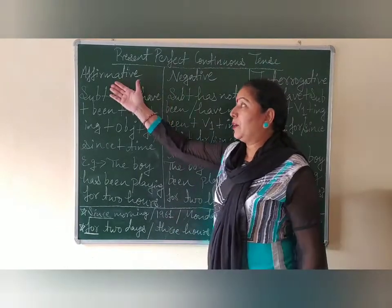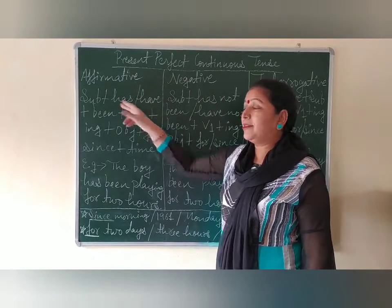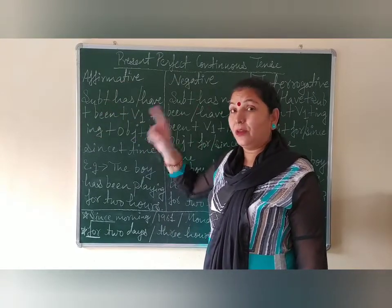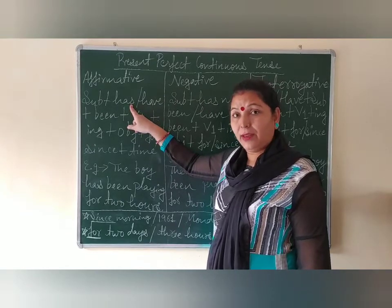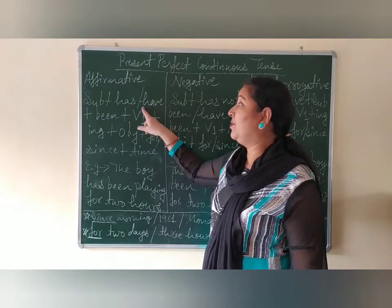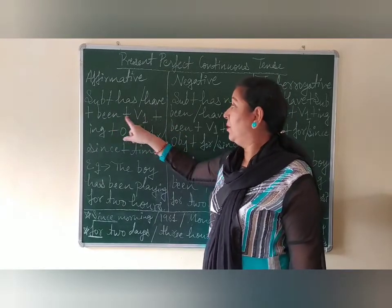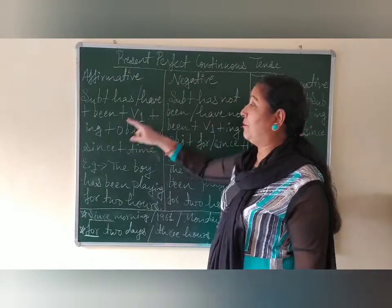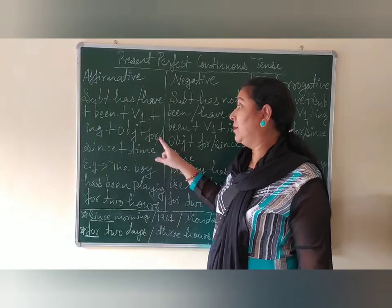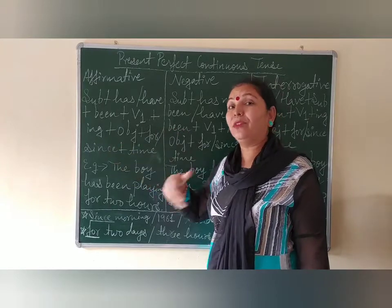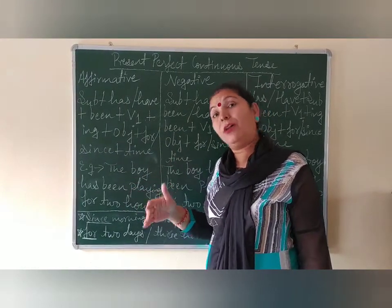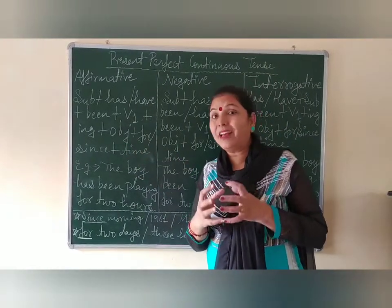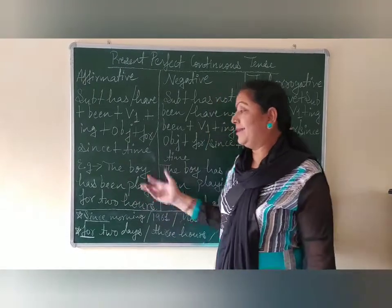Now we are going to talk about Affirmative sentences. See the structure of the sentence. Subject — it can be singular or plural. If it is singular, we use Has; if it is plural, we use Have. Then comes Been, then the verb first form plus ING, because it is continuous. Then plus object, and then For or Since — it depends on the sentence. For and Since are always used together with time.